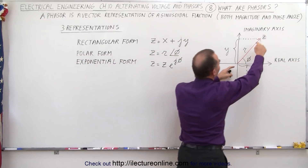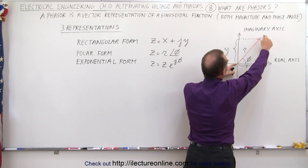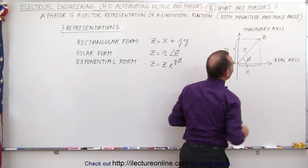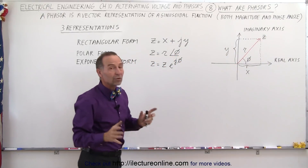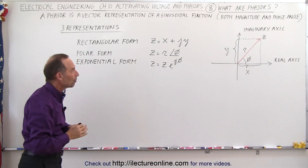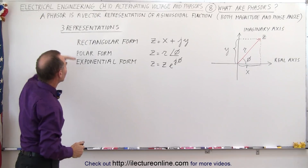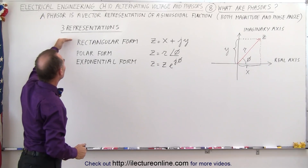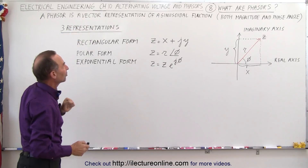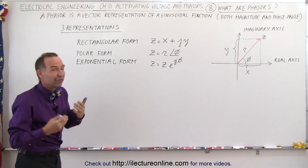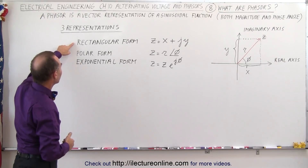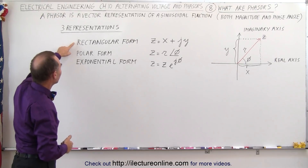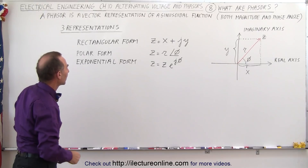R is the length of the vector. Z is also considered the length of the vector, and we use Z and R in particular formats. We have three formats to represent that vector — or phasor — of a sinusoidal function: the rectangular form, the polar form, and the exponential form.